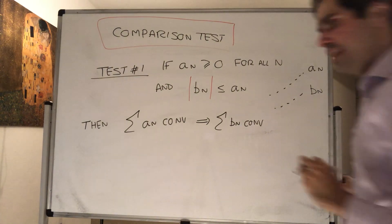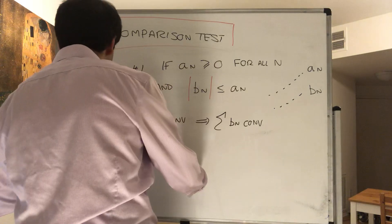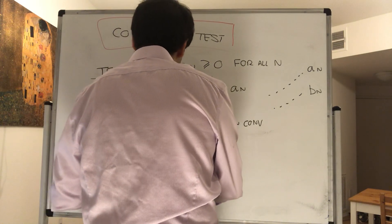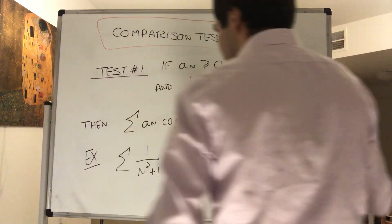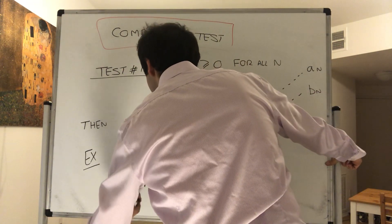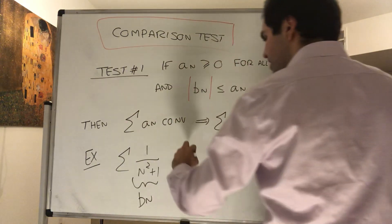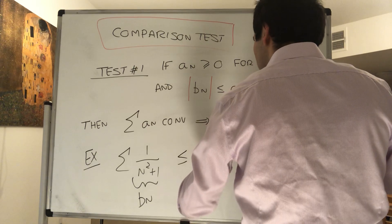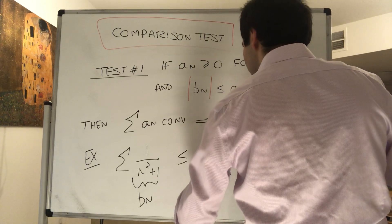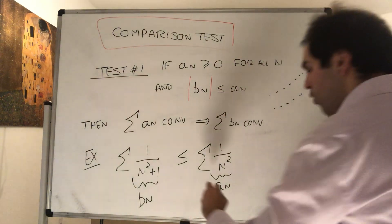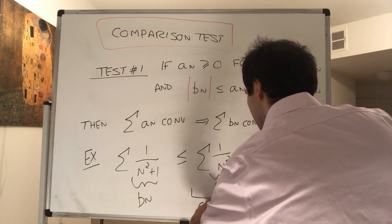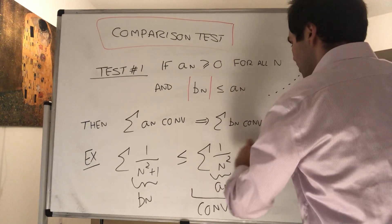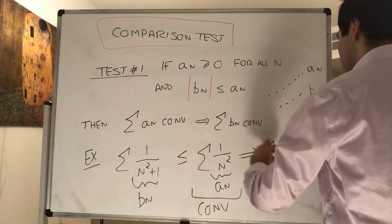For instance, let's figure out whether the series of 1 over n squared plus 1 converges. This is kind of like our b_n, our smaller series. We know this is less than or equal to the sum of 1 over n squared, the bigger series. We know that this converges, because this is the p=2 series. Therefore the smaller series must converge as well.